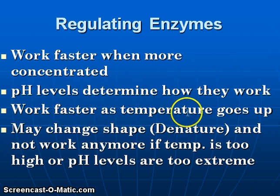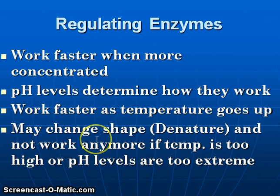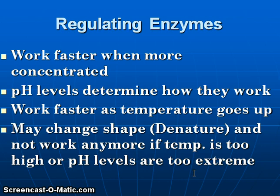Enzymes are going to work faster as temperature increases because particles are going to be moving faster, so enzymes find their substrates more quickly. There is a limit to this — if the enzyme is heated too much, it can actually change shape. We call this the process of denaturation. If a protein or enzyme denatures, its shape is going to be altered and changed, and it may not be able to perform its function at all. So if temperatures go too high, this could actually shut down the ability of an enzyme to do its job.